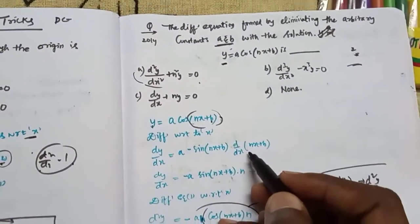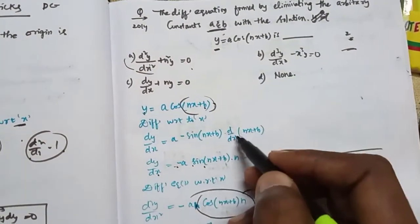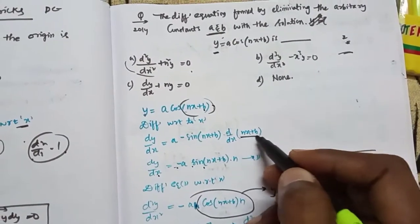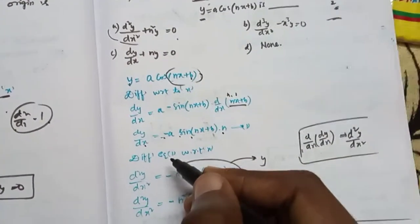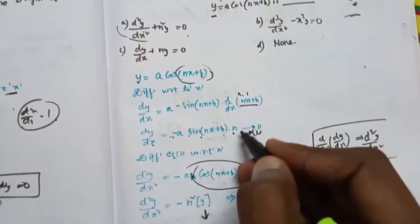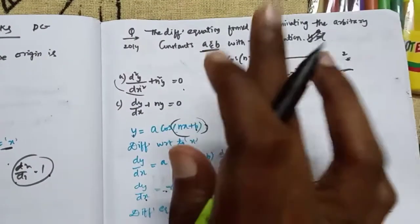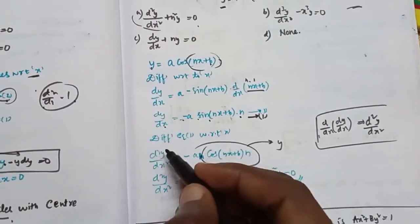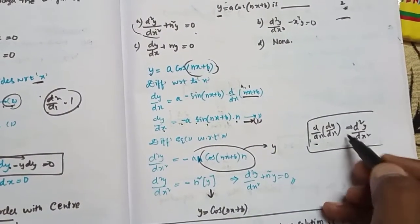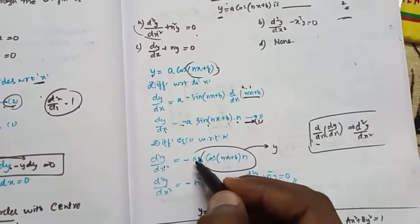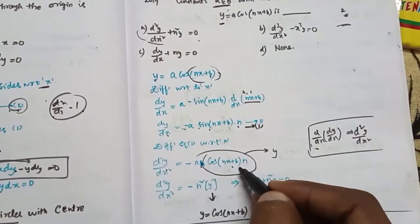So dy/dx equals minus a·n·sin(nx + b). Now we differentiate again to get d²y/dx². The derivative of minus sin(nx + b) is cos(nx + b) times n. So d²y/dx² equals minus a·n·cos(nx + b) times n, which is minus an²·cos(nx + b).